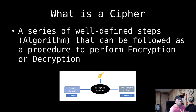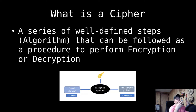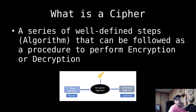So, what is a cipher? Essentially, we want to take a message and have a mechanism to convert it from plain text — where we can all read and understand it — into cipher text, where we can't quite understand what the original message was. It basically hides the meaning. That algorithm or encryption we're applying is our cipher — it's just a series of steps that can be followed to perform encryption or decryption.